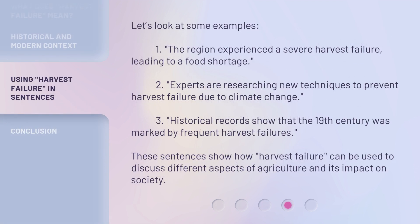Let's look at some examples. 1. The region experienced a severe harvest failure, leading to a food shortage. 2. Experts are researching new techniques to prevent harvest failure due to climate change. 3. Historical records show that the 19th century was marked by frequent harvest failures. These sentences show how 'Harvest Failure' can be used to discuss different aspects of agriculture and its impact on society.